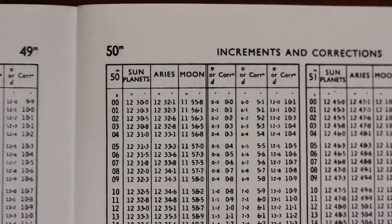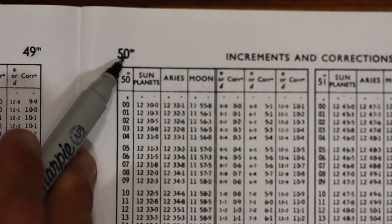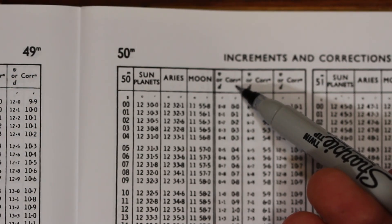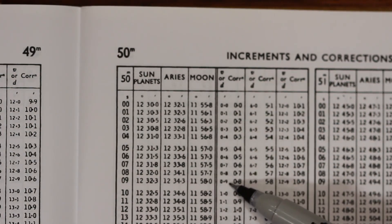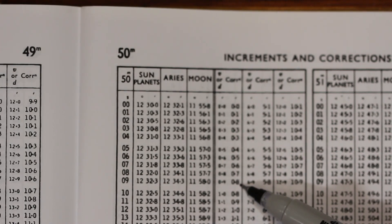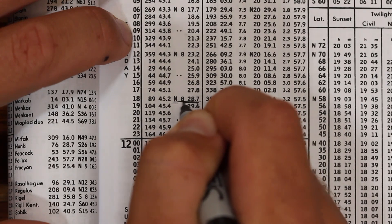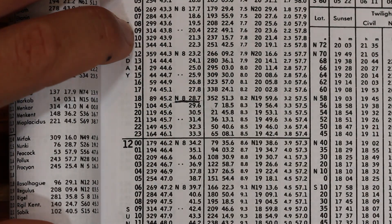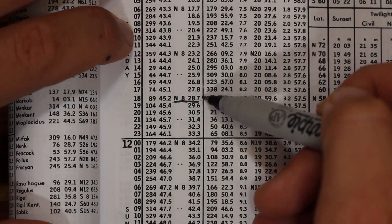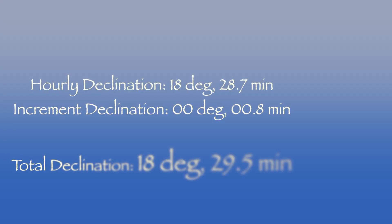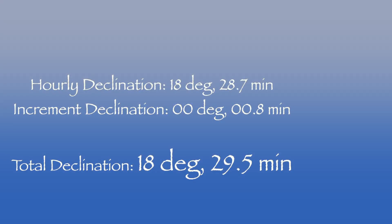To account for those 50 minutes still remaining, we use the back of the book — the increments and corrections pages. We flip to 50 minutes, then look under the V or D correction tables for 0.9 and come up with a corrected figure of 0.8. That 0.8 needs to be applied to the hourly figure to determine the total declination. Since declination is increasing it's added, so total declination equals the hourly declination plus the increment.